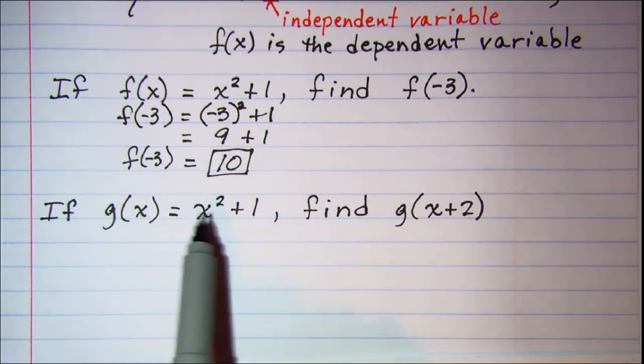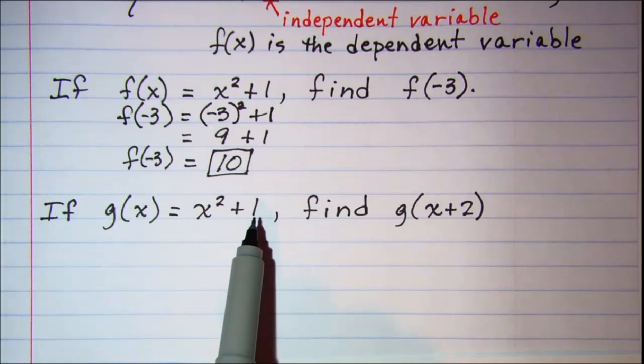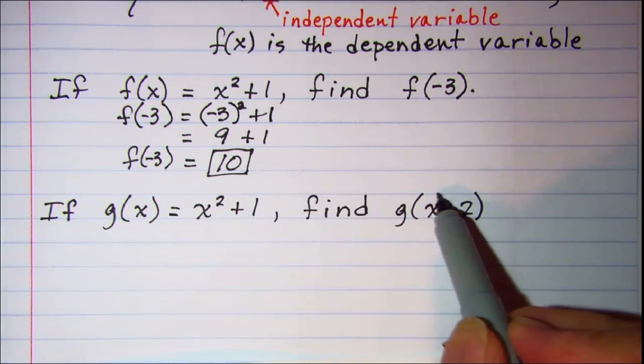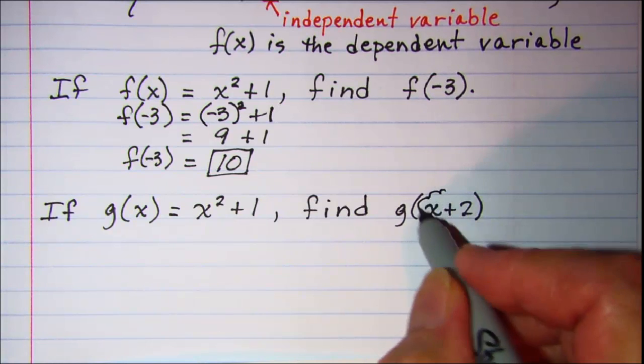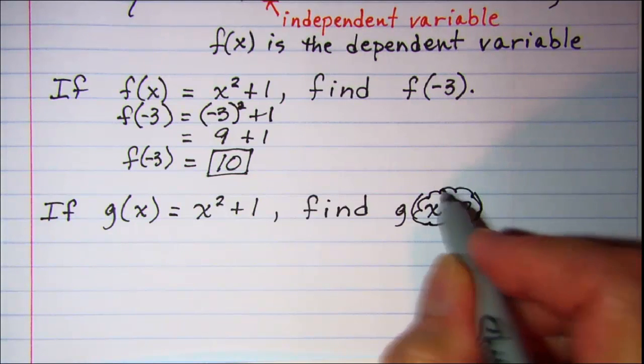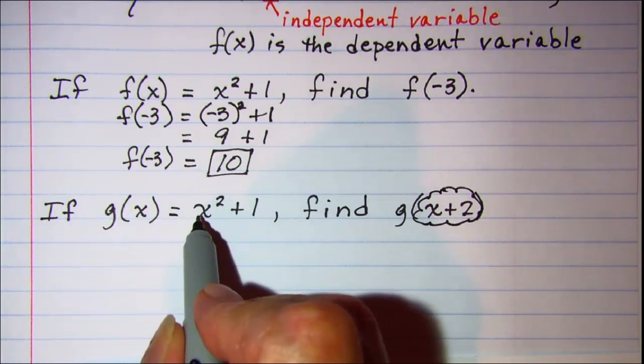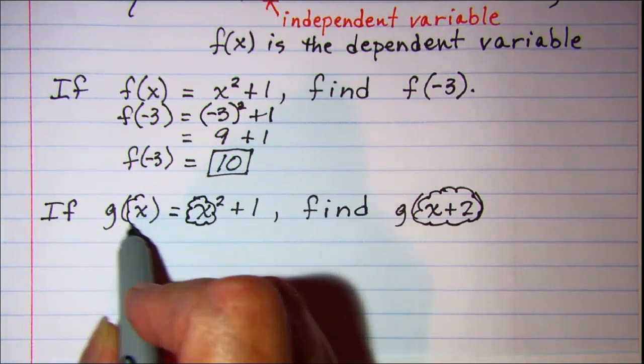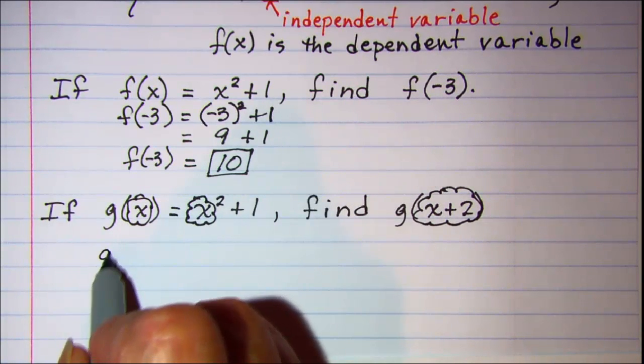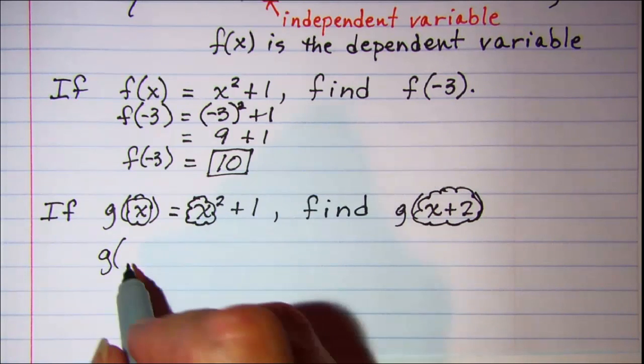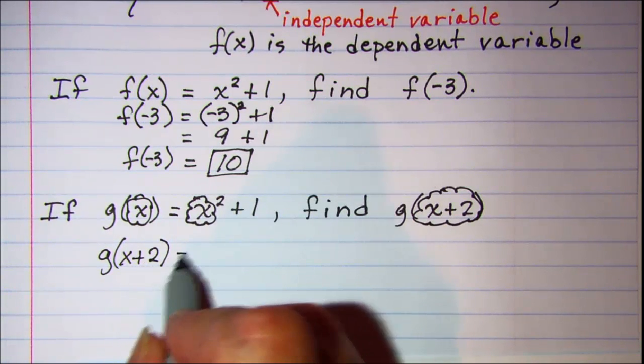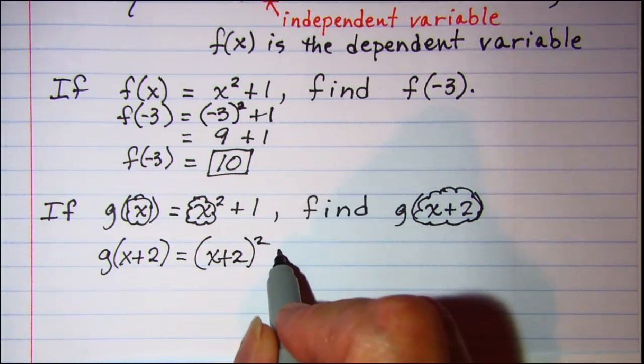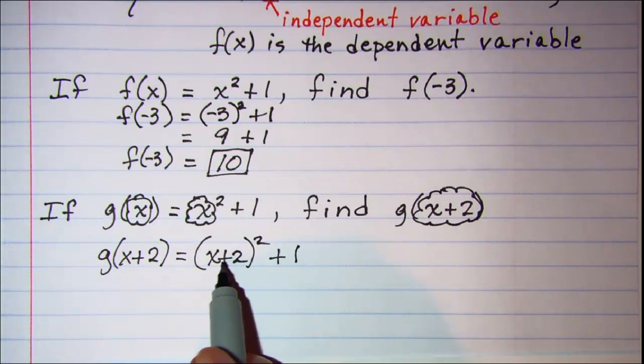Now if g(x) is equal to x squared plus 1, find g(x+2). Again we're going to substitute this argument into our function every place where we have an x. g(x+2) is equal to (x+2) quantity squared plus 1.